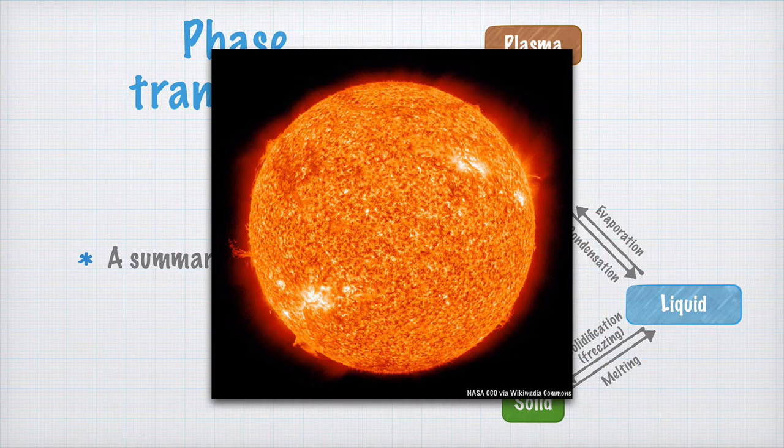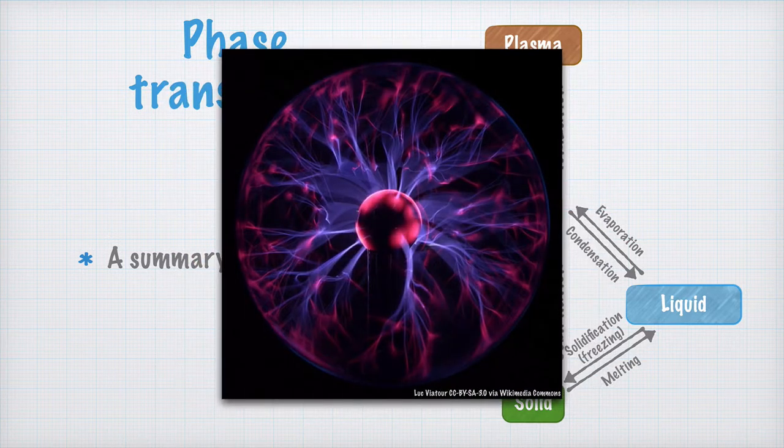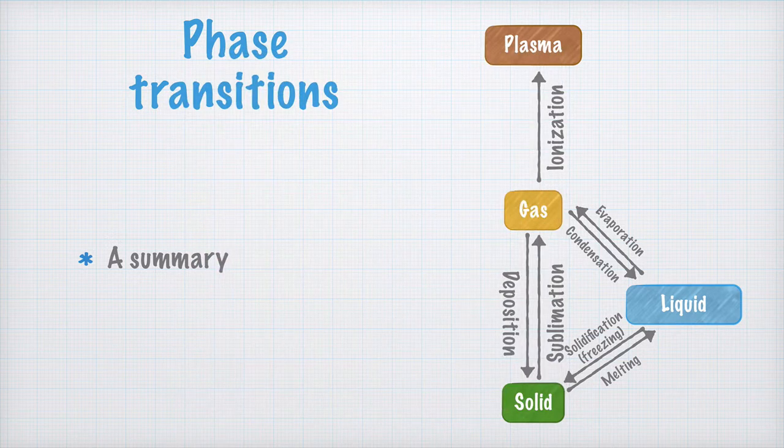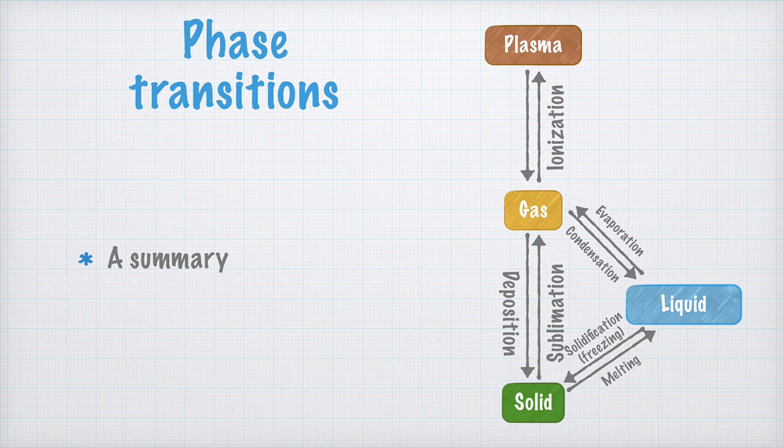But here on Earth, we may see plasma close up, for example in plasma screens or plasma balls like this one. In any case, let's finalize our drawing by writing that when plasma returns to the gaseous state, it's called deionization.